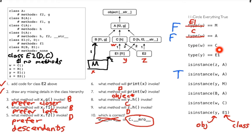Type of W equal to C — that's true, W is a C. Is type of Y equal to E1? Yes, Y is an E1, so that's true. isinstance(Z, A): Z is an E2, and I can get to A from there — actually a couple of ways, it's my grandparent twice over. So that's a true statement.